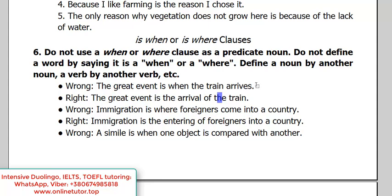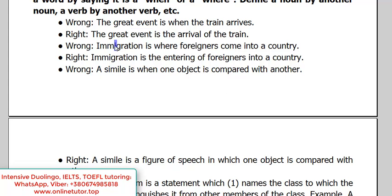So this is wrong: 'The great event is when the train arrives.' In speaking, you may be forgiven to some degree because speaking allows greater freedom. But in your writing, you will be penalized. The correct variant is: 'The great event is the arrival of the train.' You see — I have a noun 'is,' so I should have a nominal predicate. Not 'when something happens' or 'to do something' like 'the great event is to arrive by train.' No.